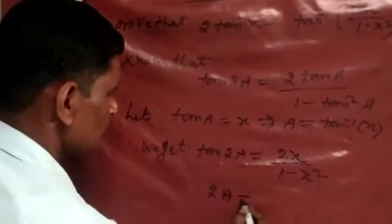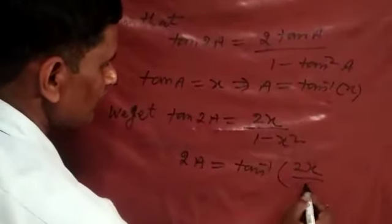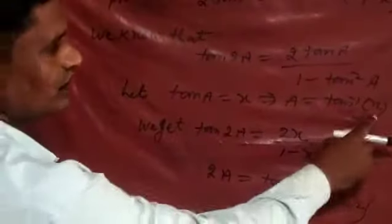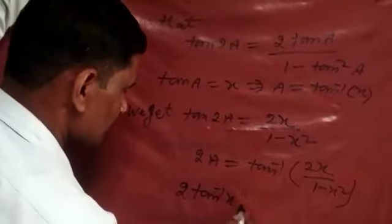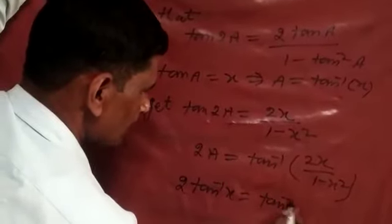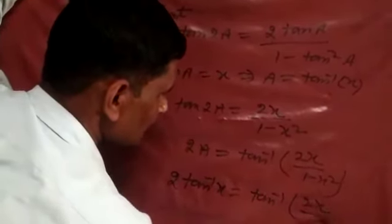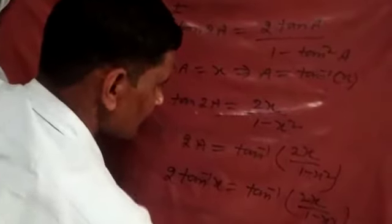This implies that 2a equals tan inverse 2x upon 1 minus x square. Put the value of a equals tan inverse x. So we get 2 tan inverse x equals tan inverse 2x upon 1 minus x square.